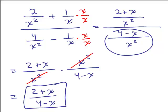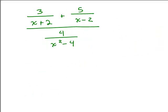Both methods are completely valid — you just have to make sure you do them correctly. Let's try another one: 3 over (X plus 2) plus 5 over (X minus 2), all over 4 over (X squared minus 4). To use method 2, you need the least common denominator of all the denominators. You should recognize that (X plus 2)(X minus 2) equals X squared minus 4, so X squared minus 4 is your least common denominator.